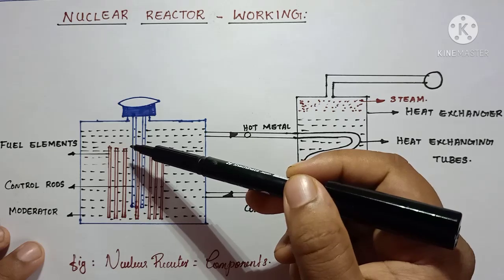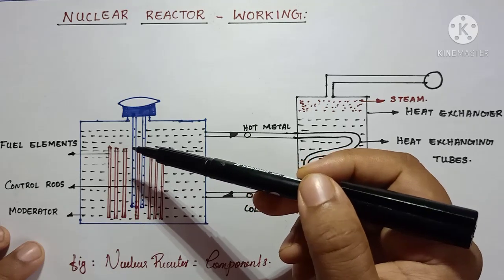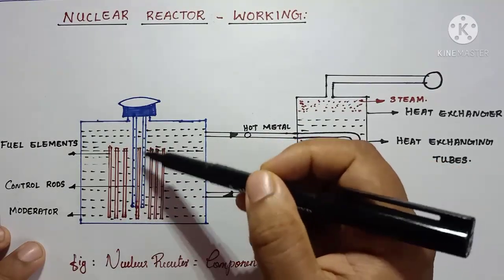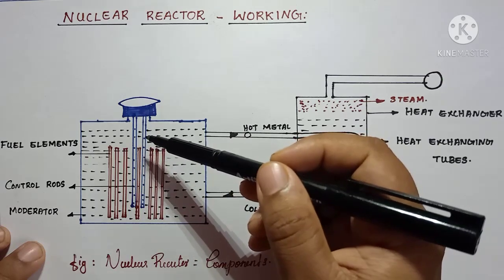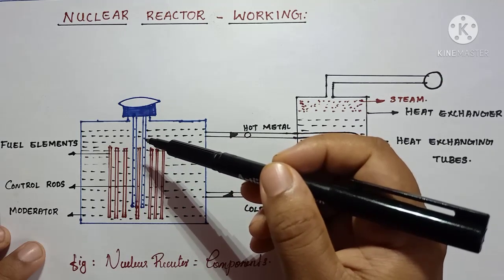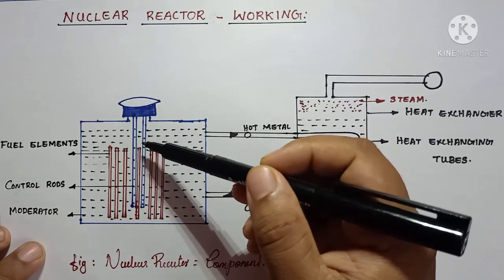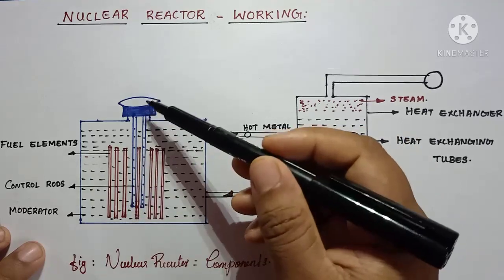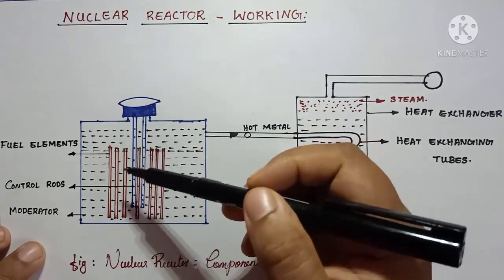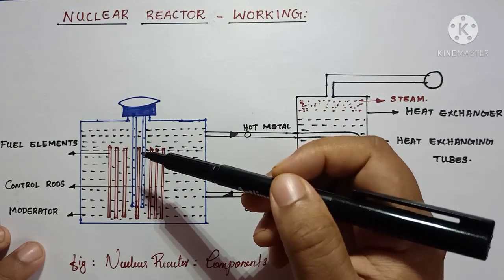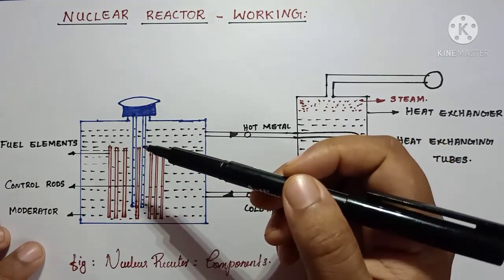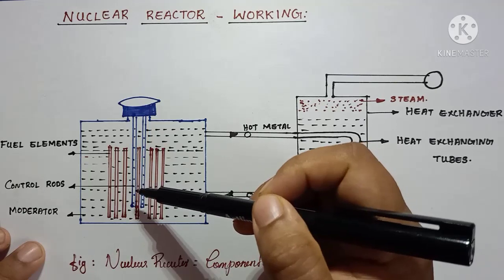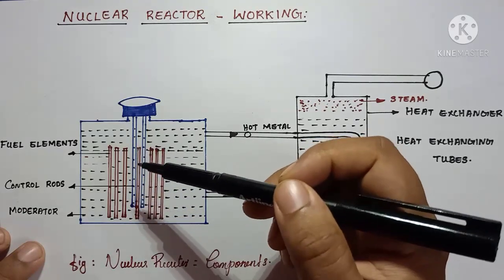Because electrons are the major elements required for nuclear fission, and these control elements will absorb these electrons, thereby the speed of nuclear fission can be controlled. If we want to increase the speed of nuclear reaction, we can remove these control rods, then we can generate maximum electrical energy from this nuclear power plant.